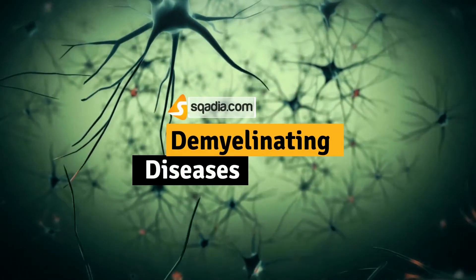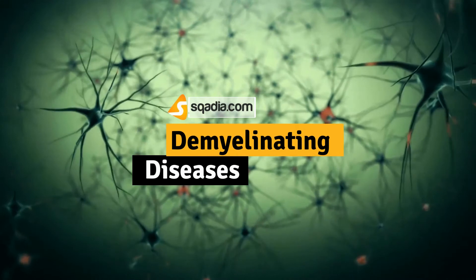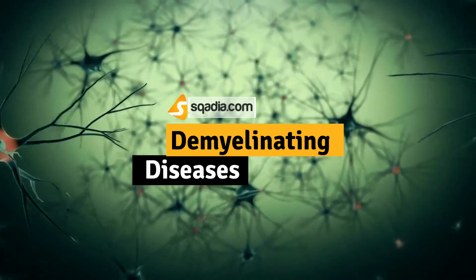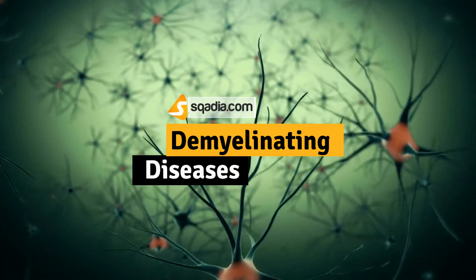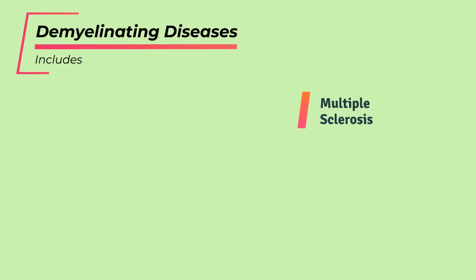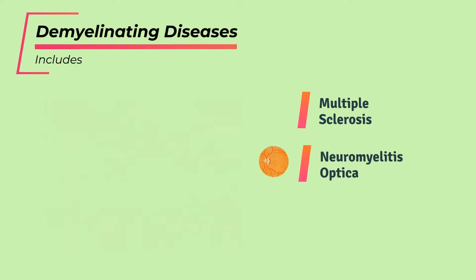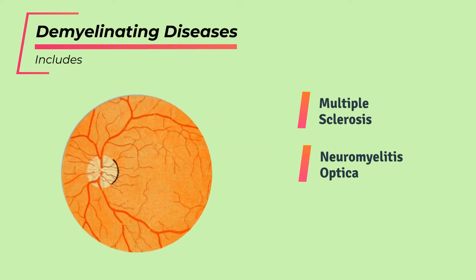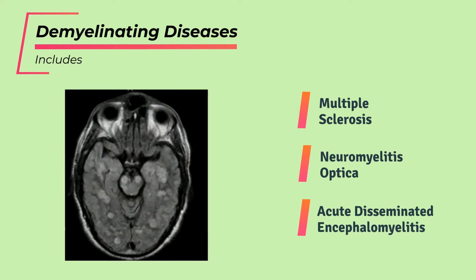Demyelinating diseases are immune-mediated conditions characterized by preferential destruction of central nervous system myelin. This category includes multiple sclerosis, neuromyelitis optica, and acute disseminated encephalomyelitis.